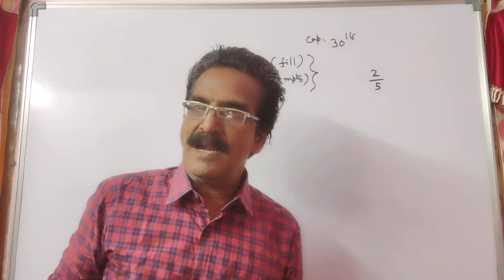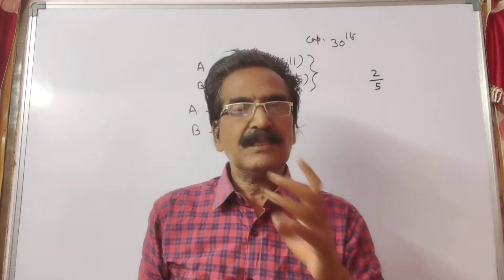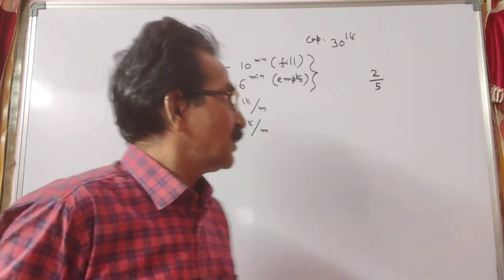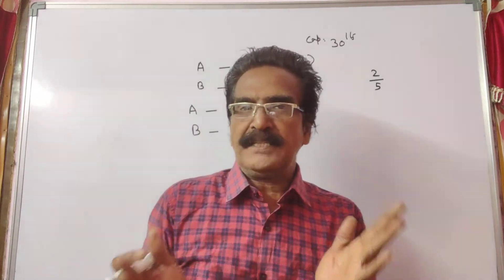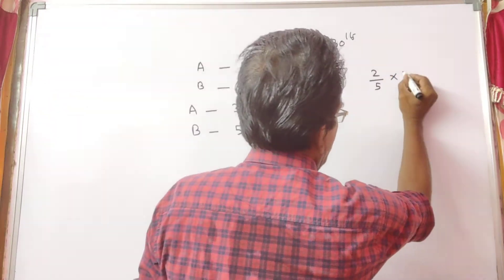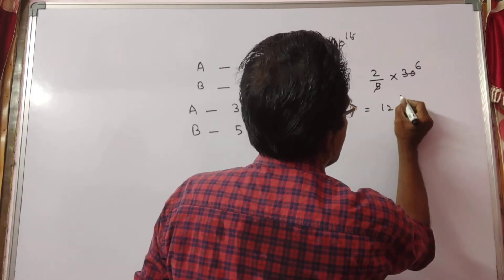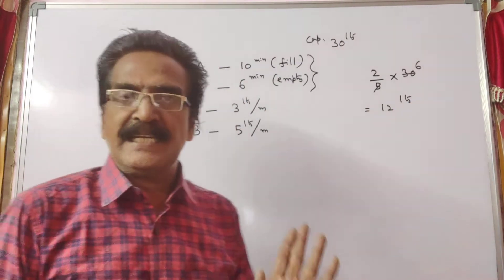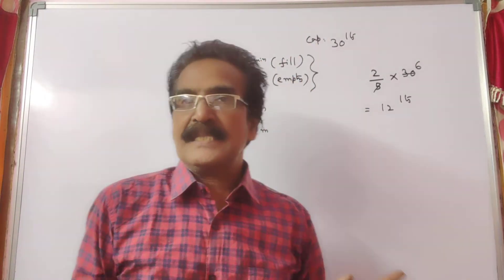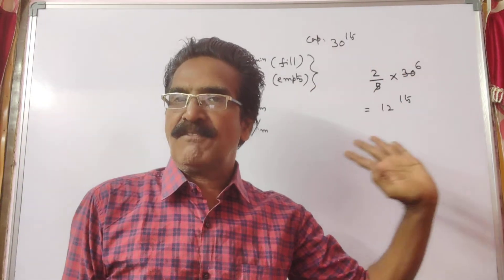3 liters of water is filled and 5 liters of water is emptied. Net, 2 liters of water is drained out. The present quantity of water in the tank is 2 by 5 into 30, which equals 12 liters of water. Total capacity is 30 liters.